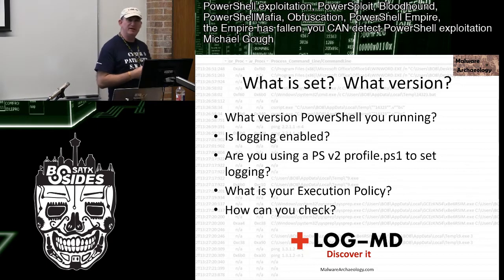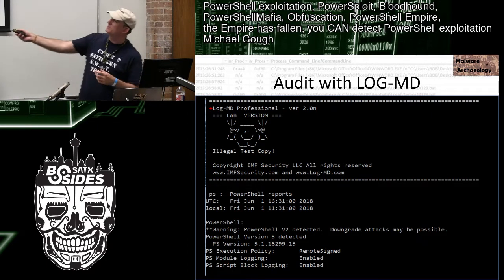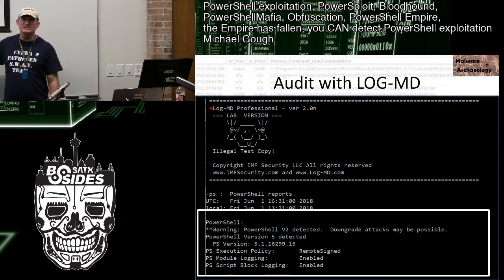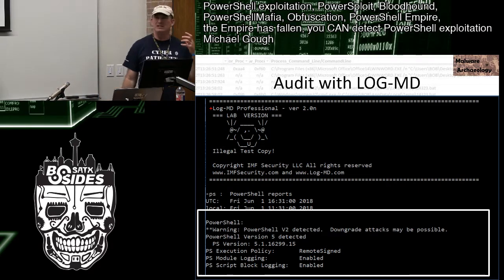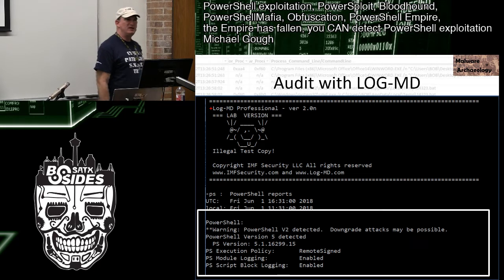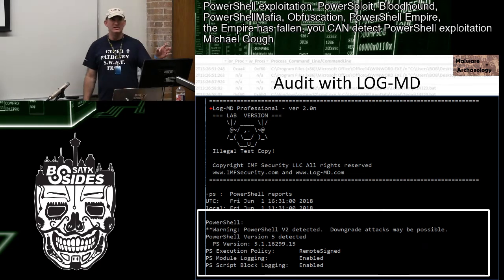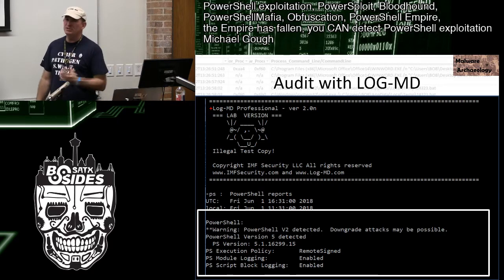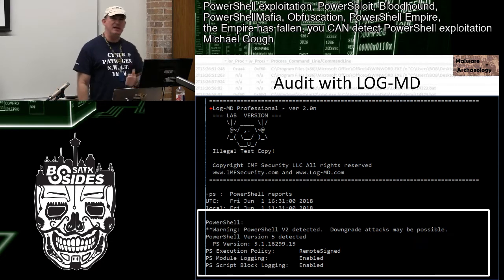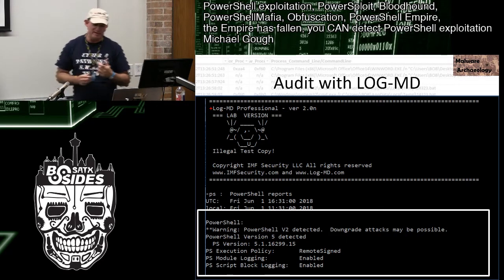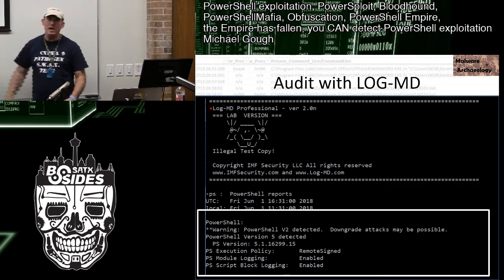Thank you, Microsoft, for giving us execution policy bypass — and poof, whatever your policy is does not work. How do I check my systems? How do I audit them? A free tool called LogMD — we do have a pro version, full disclosure. When you run it with the default -1 flag, the first thing it tells you is what the execution policy of your box is and what version of PowerShell you're running. It also tells you whether downgrade attacks are possible because PowerShell v2 DLLs — system.management.automation.dll — are on the box and cannot be removed.